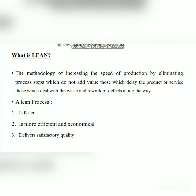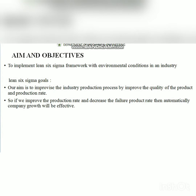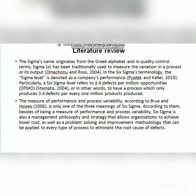So we will produce the satisfaction quality of customers. If you look at the objective of industry production, that is the main goal of the production rate. Once we improve the product rate, we will decrease the failure productivity rate. We will increase the growth of the product rate. If we increase the production rate, we will increase the failure product rate. At the same time, we will increase the growth of the product rate.